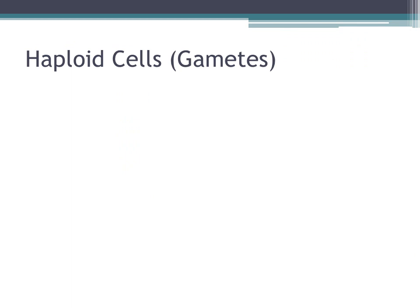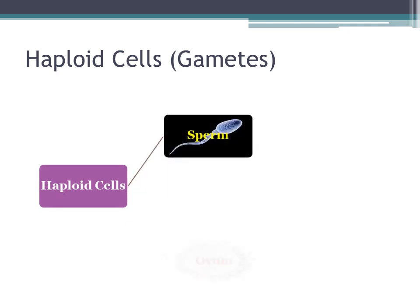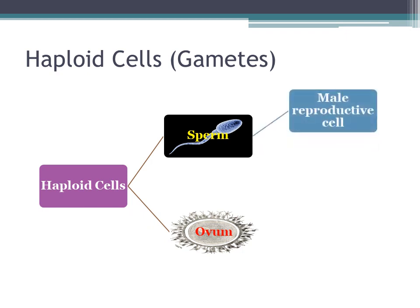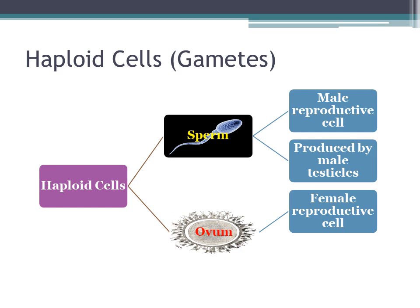Haploid cells, also called gametes, are of two types. A haploid cell can be a sperm cell or an ovum. The sperm cell is the male reproductive cell and it is produced by the male testicles, while the ovum is the female reproductive cell and it is produced by the female ovaries.